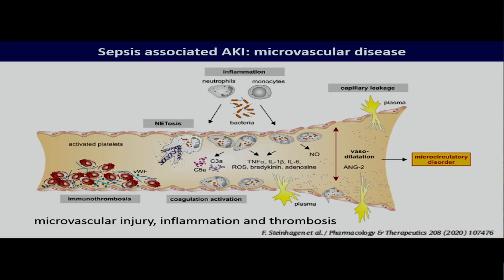At histology, there will be features of thrombi in the blood vessels. There will be signs of coagulation activation, and there will be signs of inflammation and endothelial dysfunction. And we believe these processes can occur in patients with sepsis and can occur in the renal vessels.